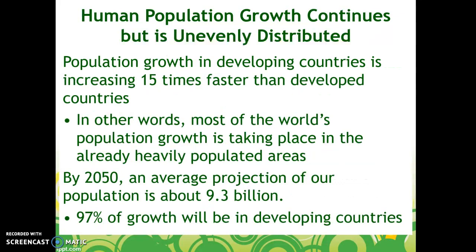Population growth in developing countries is increasing 15 times faster than in developed countries. In other words, most of the world's population growth is taking place in places that are already heavily populated. By 2050, the average projection of our population is about 9.3 billion people, and 97 percent of that growth will be in the developing countries.